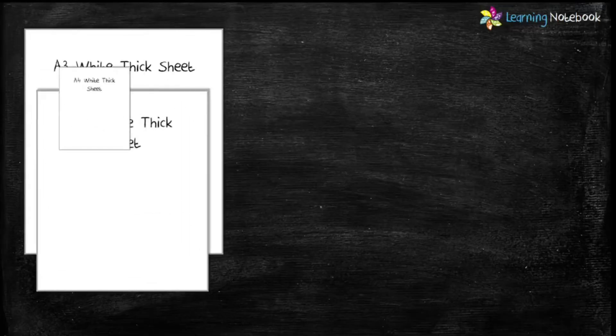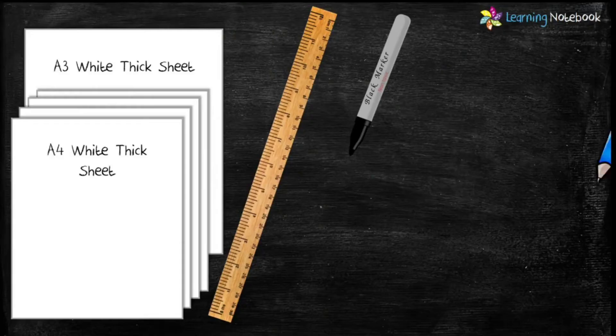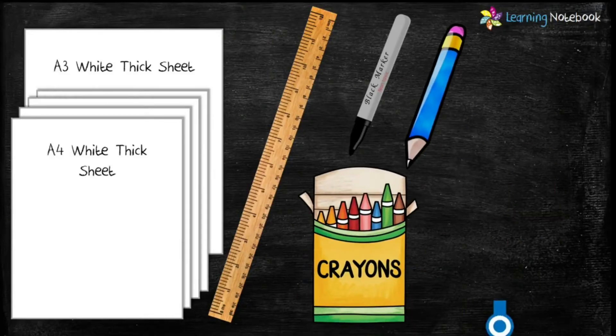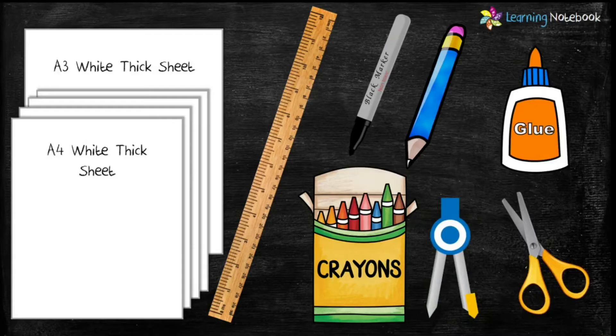For this activity, we need one A3 white thick sheet, some A4 white thick sheets, a ruler, a black marker pen, a pencil, a pair of scissors, a compass, glue, and a box of crayons.